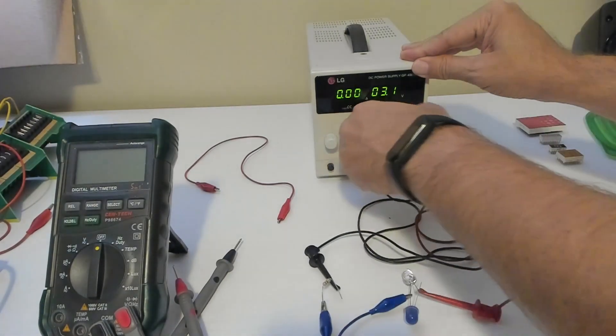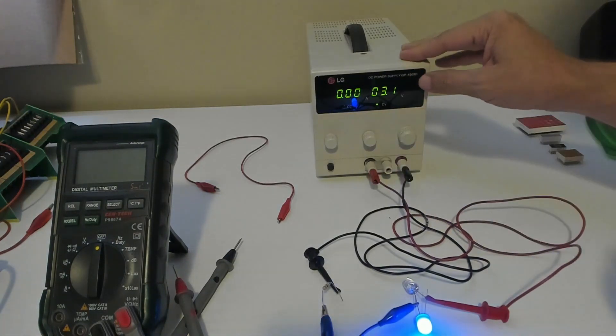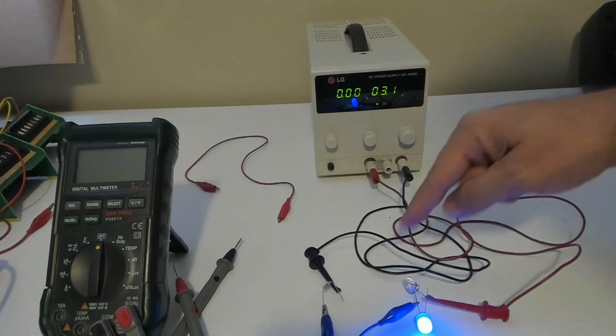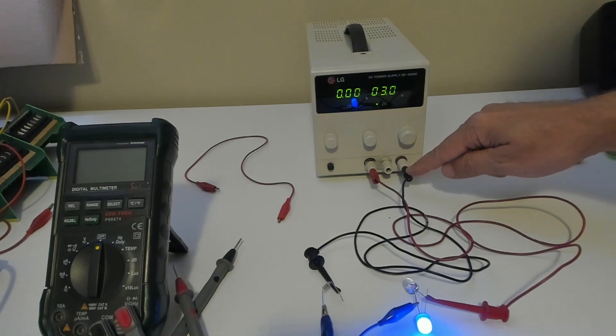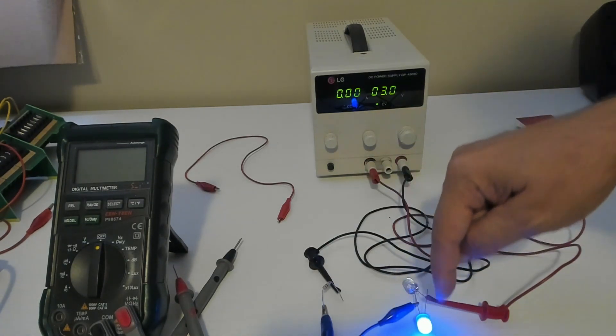Now let's swap the wires around. Remember the colors of the wire don't matter. So now the red wire is going to our negative and the black wire is going to our positive. Notice how the lights switch which one is glowing.